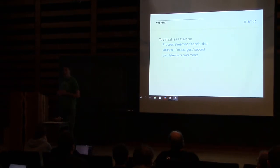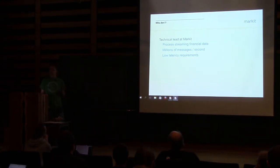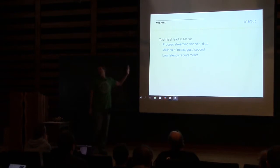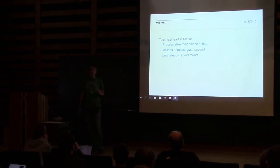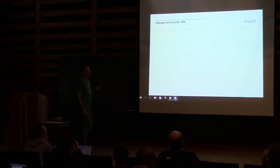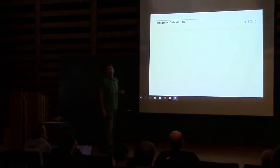I really care about these issues and I want my code to be about as fast as it can possibly be. When I was preparing for this presentation, I realized I could stand up here and give you a whole bunch of charts and numbers and graphs. But the reason I'm approaching it differently goes back to two researchers — Festinger and Carlsmith — in 1959, who ran a now-famous experiment in social psychology.